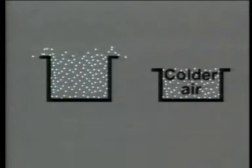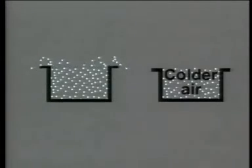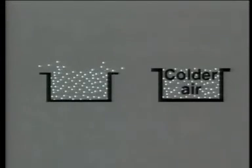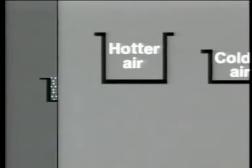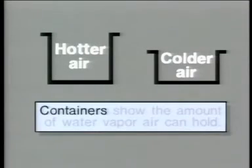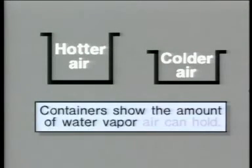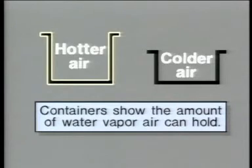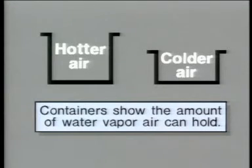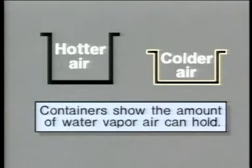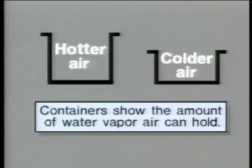As the hotter air mass cools, the container gets smaller — the colder the air gets, the less water it can hold. A large container represents hotter air that can hold more water vapor; a smaller container represents colder air that can't hold as much water vapor.